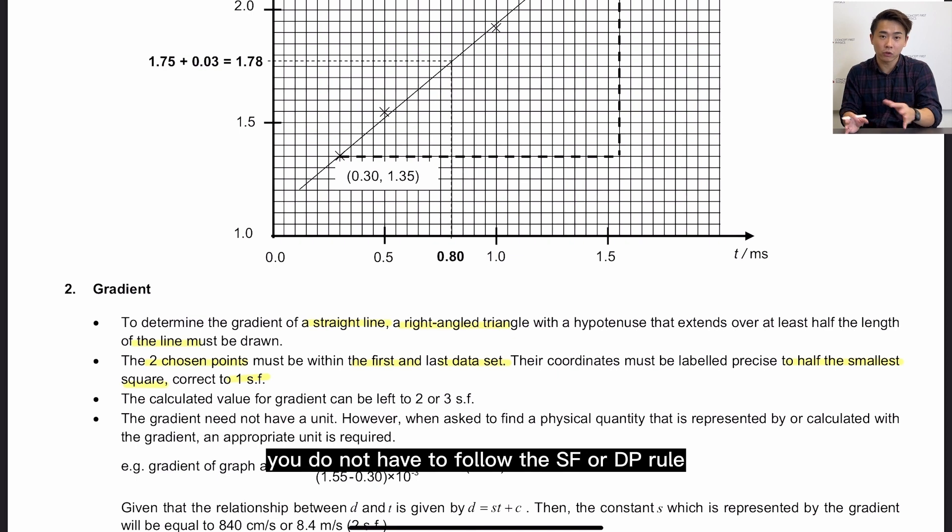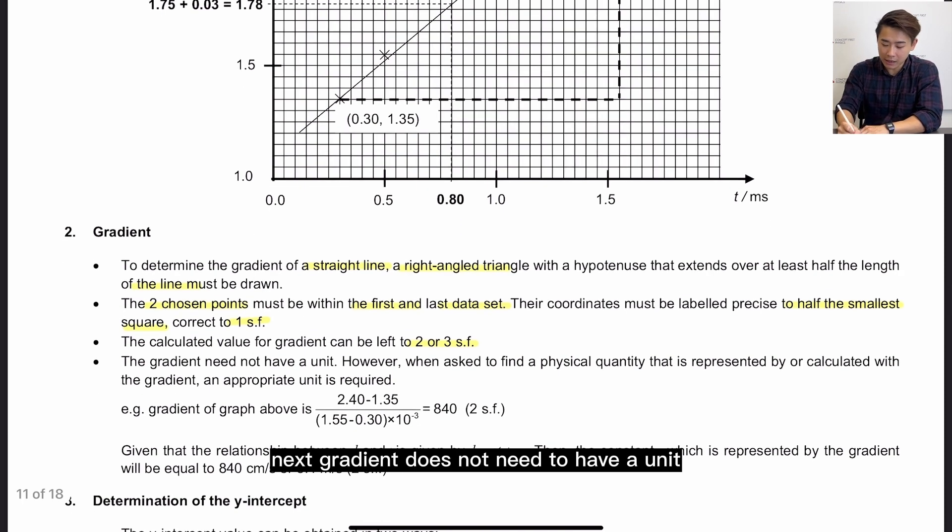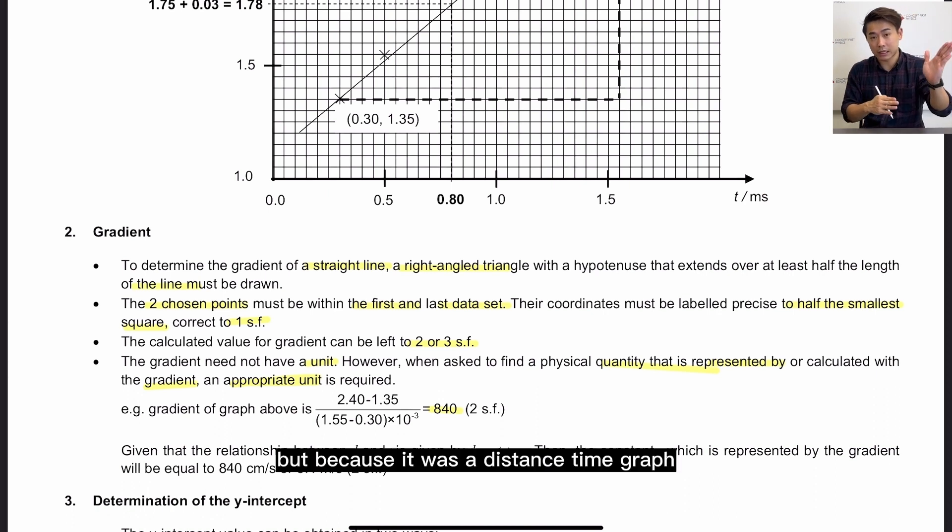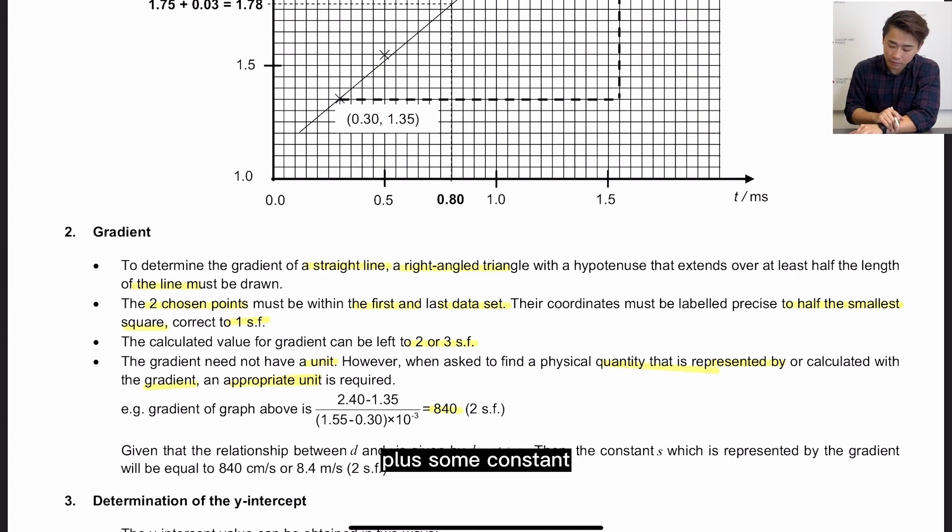Now gradient is very special. You do not have to follow the sf or dp rule. In fact, the final answer is just left to 2 or 3 sf. Next, gradient does not need to have a unit. However, when you are asked to find a physical quantity that is obtained or represented by the gradient, because it is a physical quantity, it must have the units. So one example is this: if you just calculate gradient and you find that the gradient is 840, but because it was a distance-time graph, and you know that the formula is distance is v times time plus some constant, then the constant s which represents speed and is given by the gradient should have a unit because after all it represents speed.